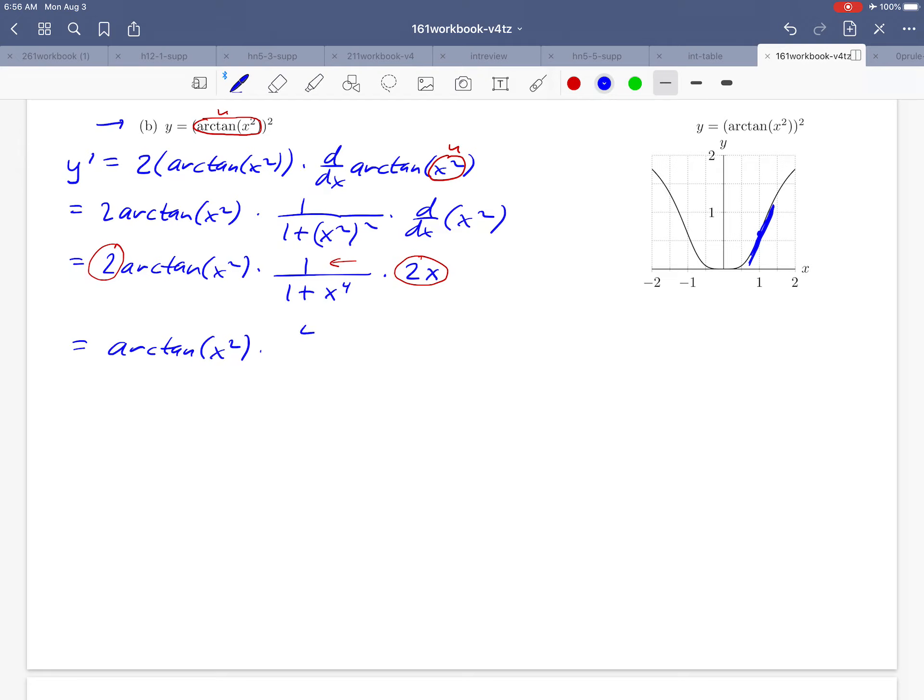If we do all of those things together, we're going to get arctangent of x squared times 4x over 1 plus x to the fourth. We can even go one more step and multiply these two fractions, putting everything into one fraction all together like this. That's just a simpler way of writing our derivative.